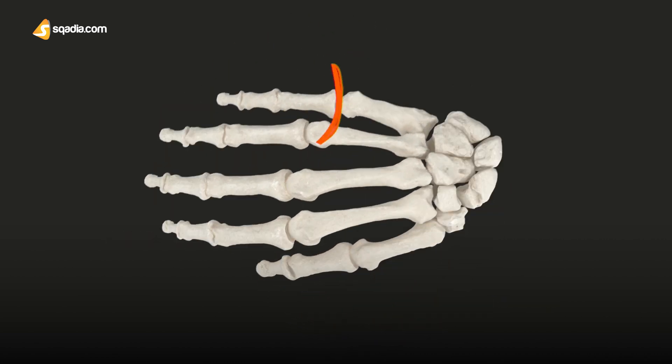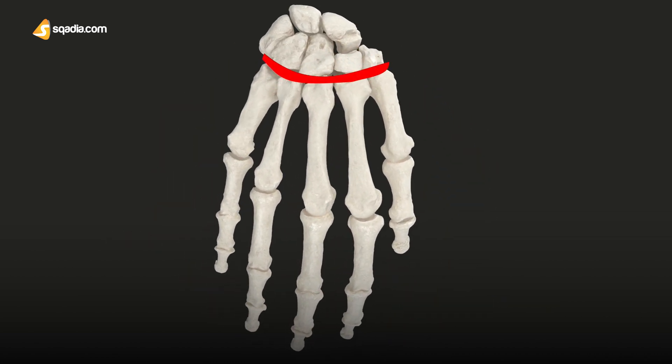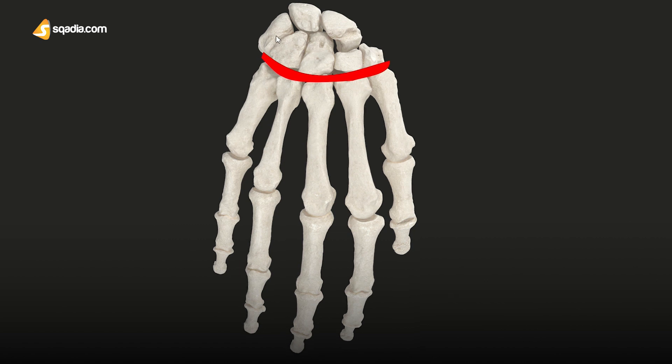If we change the view, we see a transverse arch formed by the metacarpal bones, to which the rigid row of distal carpal bones are fixed. The peripheral metacarpals — the thumb and the little finger — both form a cup-shaped palmar gutter which is deeper in the center, forming a concavity.